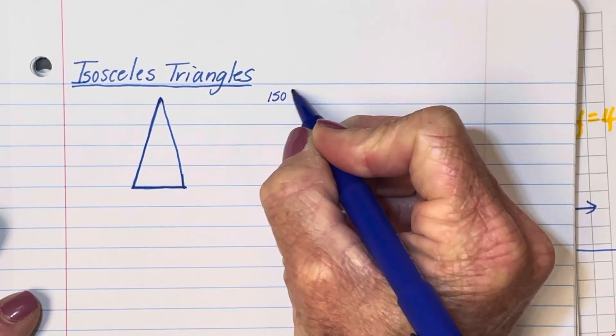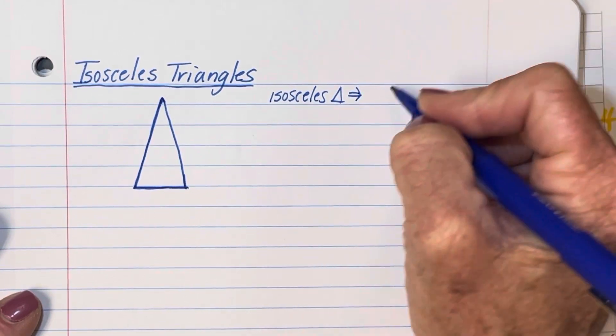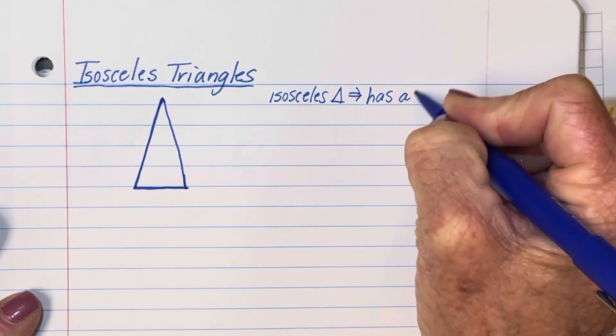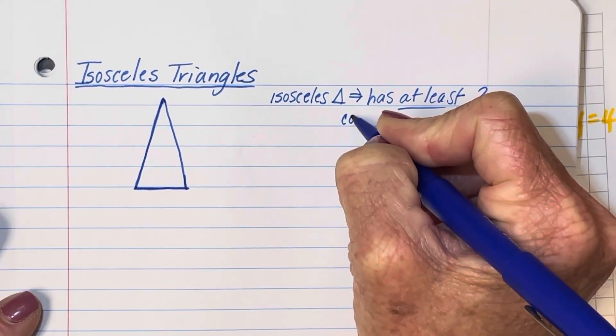An isosceles triangle, we mentioned this in an earlier video, by definition has at least two congruent sides.